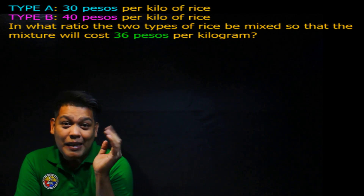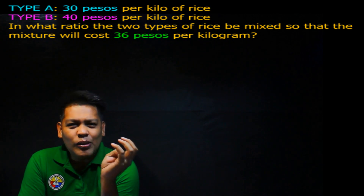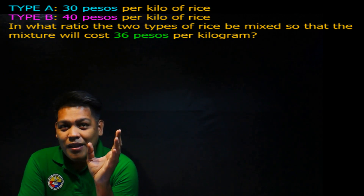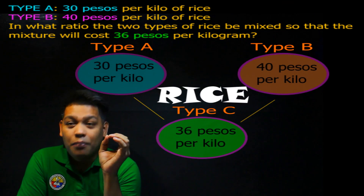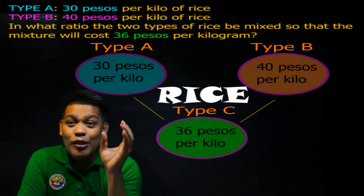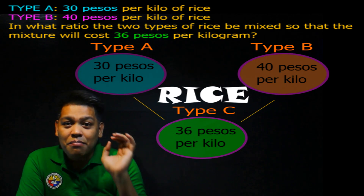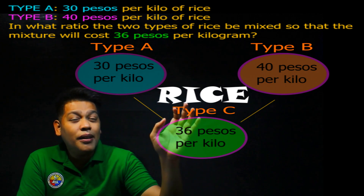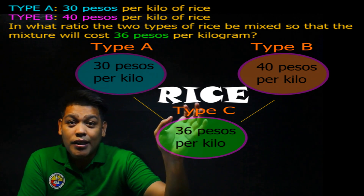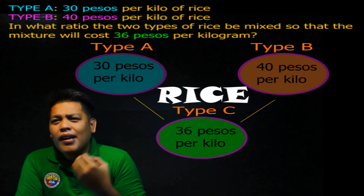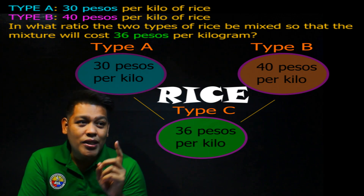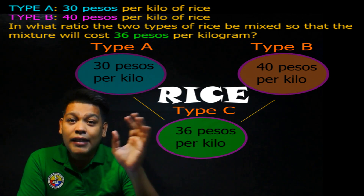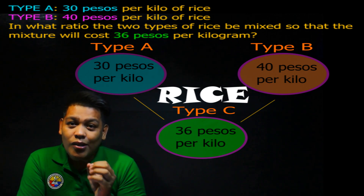For problem number one, for example, you are selling rice. We have Type A rice, which costs 30 pesos per kilo. Then Type B rice costs 40 pesos per kilo. Now, you want to create another type, which is Type C, with a price of 36 pesos per kilo.